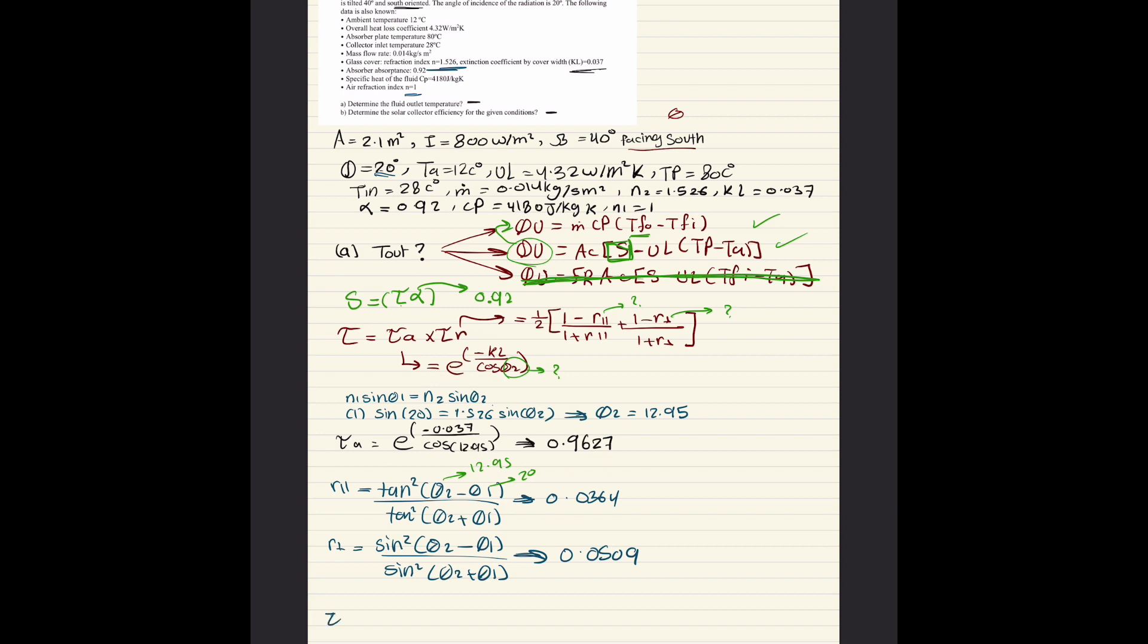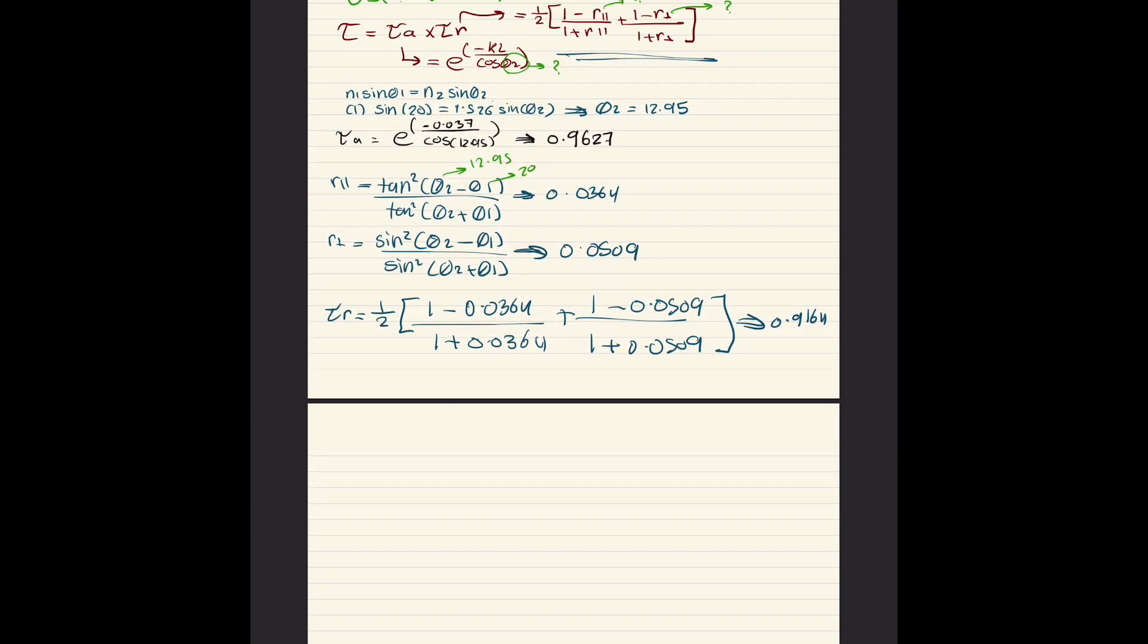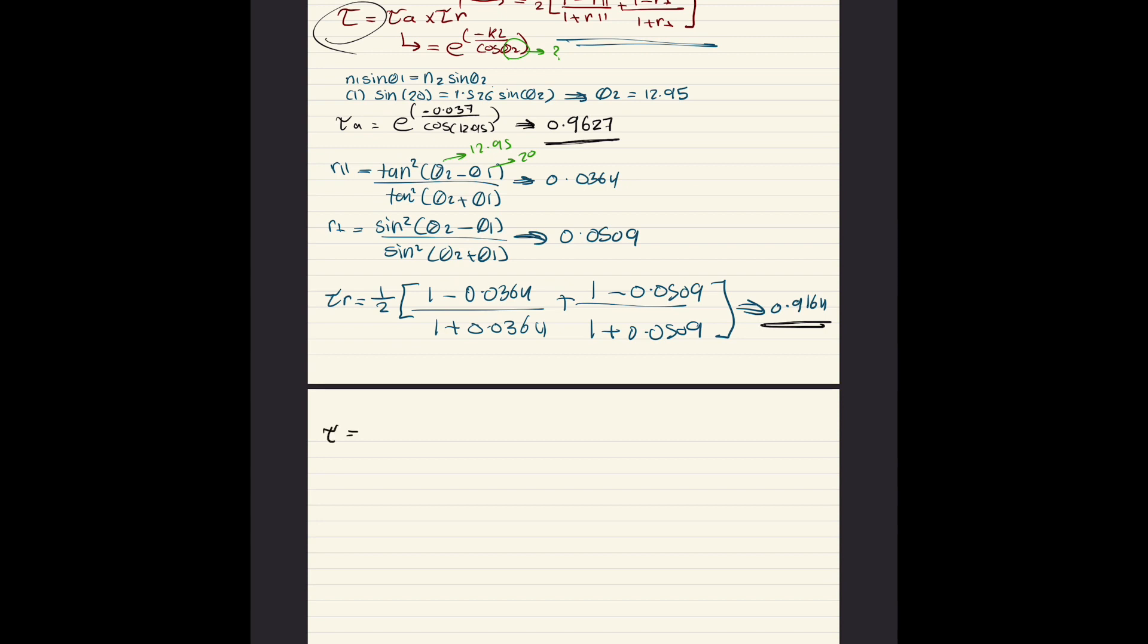Now plugging these into tau R, which is half times 1 minus R parallel 0.0364 over 1 plus 0.0364, plus 1 minus 0.0509 over 1 plus 0.0509, equals 0.9164. Now we multiply tau R and tau A together to get the transmissivity, which is 0.9164 times 0.9627, we get 0.88226.